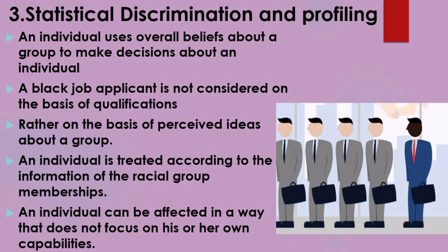In statistical discrimination and profiling, an individual uses overall beliefs about a group to make decisions about an individual. These perceived ideas are assumed to apply to the individual. For example, an employer may judge a Black job applicant on the basis of group averages rather than on his or her own qualifications. This discrimination is based on beliefs that reflect the actual distributions of characteristics of different groups, and uses group characteristics to make decisions about individuals. A person is treated differently because of information associated with their racial group membership.